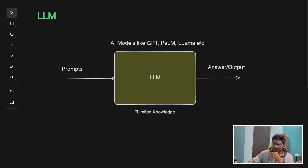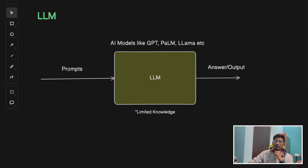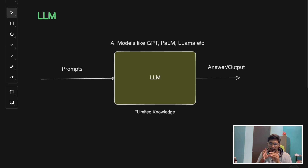So let's get started. I will try to explain my understanding about LLM and RAG in the simplest way possible, and how we can visualize these two technologies. We will also see some coding in Python and see how both differ from each other. So let's start with LLM first. LLM, or large language models - you can think of these as AI models like GPT, PALM, or LLAMA. These are popular models built by big companies.